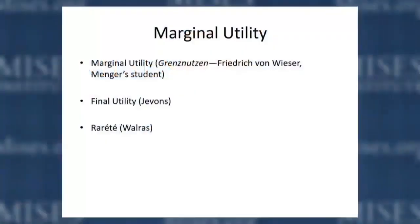They all used different names for this concept. Menger didn't name his principle — it was only later that his student Frederick von Wieser gave the term 'marginal utility' to Menger's contribution. Jevons called it 'final utility,' and the Swiss economist Walras used the term 'rareté.'